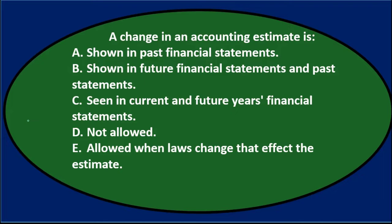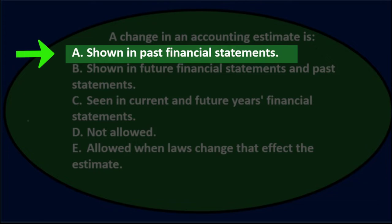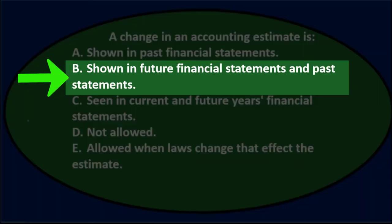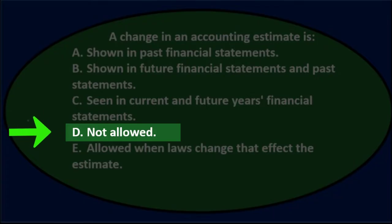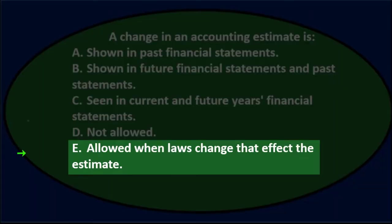Next question. A change in an accounting estimate is A. shown in past financial statements, B. shown in future statements and past statements, C. seen in current and future years' financial statements, D. not allowed, E. allowed when laws change that affect the estimate.